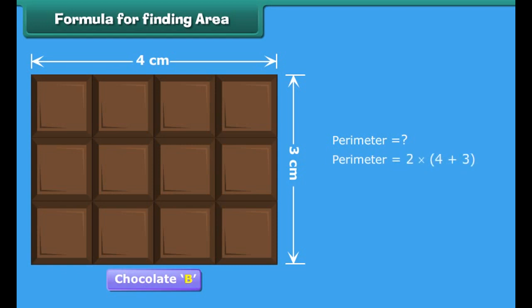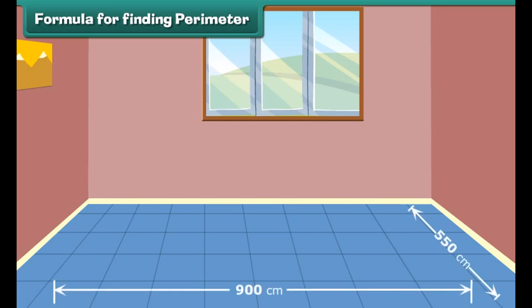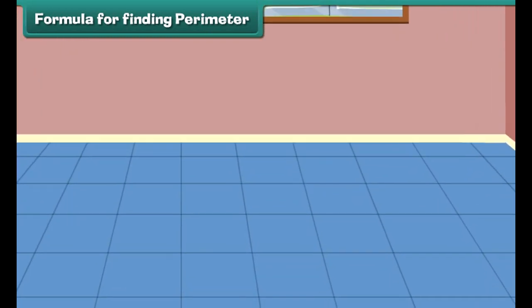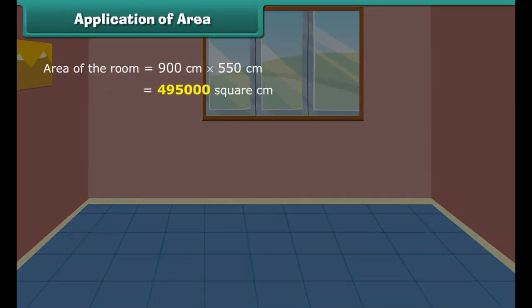We have found the area of chocolate B by counting the total number of squares on it. Alternatively, we can also calculate the area just by multiplying the number of squares along the length of the chocolate with the number of squares along its width. Thus, area is equal to the length multiplied with the width. What would be the perimeter of chocolate B? Let us find out. The perimeter will be equal to twice the sum of the squares along its length and width. Thus, perimeter of chocolate is equal to 14 cm.